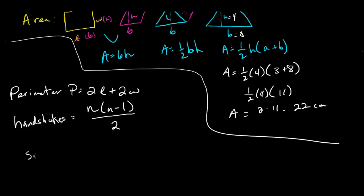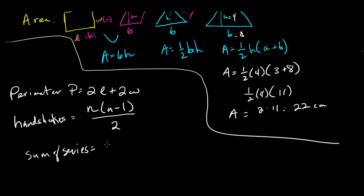Sum of a series was the one where Carl Gauss figured this out, and his is n times n plus 1 divided by 2.